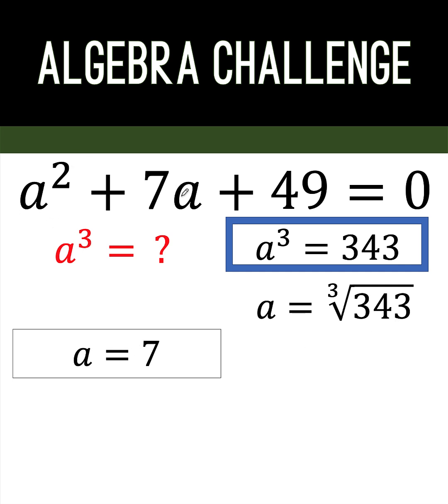this becomes 7 squared, this becomes 7 times 7, which is 49, plus another positive number, there's no way for the sum of these three terms to be equal to 0. And therefore, it's not the root of this equation. In fact, this is an extraneous root.